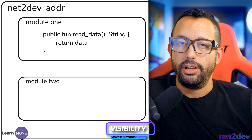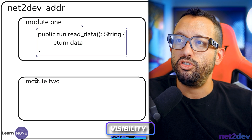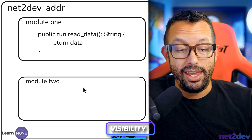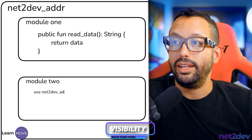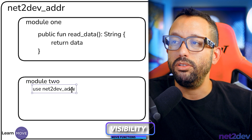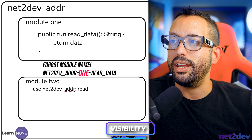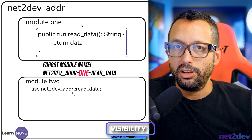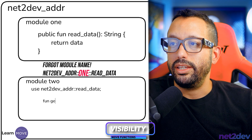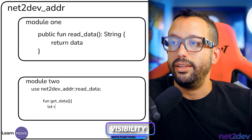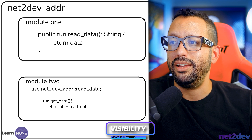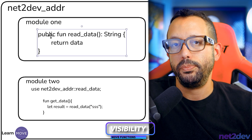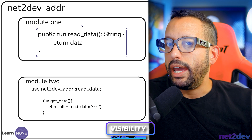However, if we mark the function as 'public', then from module two I can say 'use netto_def_addr::one' and call 'read_data'. I can define a function 'get_data' that calls 'let result = read_data(...)' and pass whatever arguments are needed. This works because the function is marked as public.